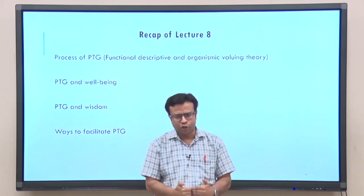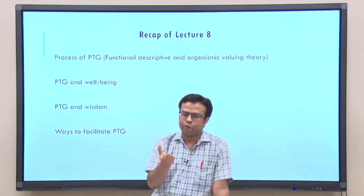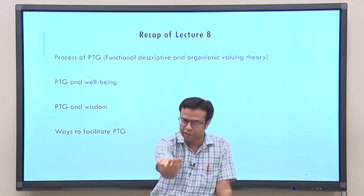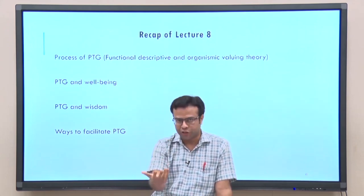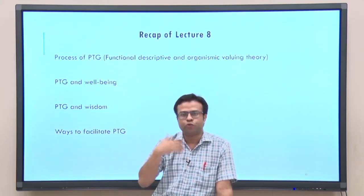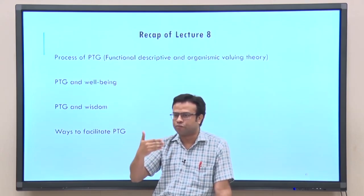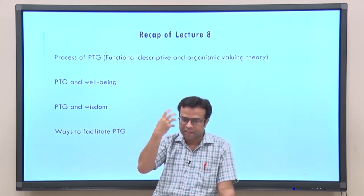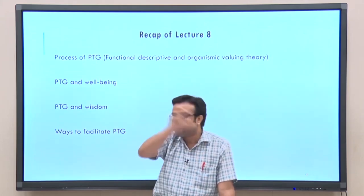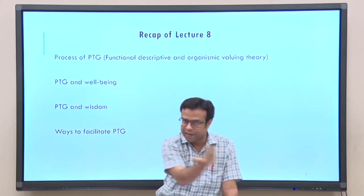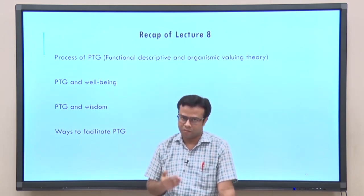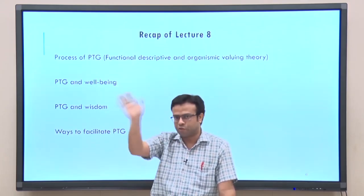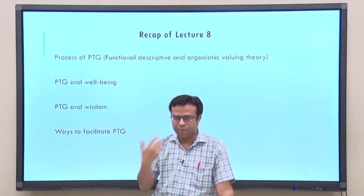They used the idea of assimilation and accommodation to explain the diverse outcomes of trauma. Assimilation is when we add new information to existing knowledge structures and accommodation is when we change our existing knowledge structure to fit new information. If we engage in assimilation after traumatic events it leads to recovery, getting back to pre-trauma baseline. Accommodation can happen in two ways: negative accommodation explains psychopathology such as PTSD, while positive accommodation — changing mental structures in a positive direction — can explain PTG and other thriving experiences.